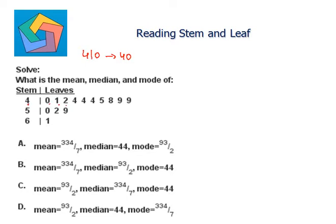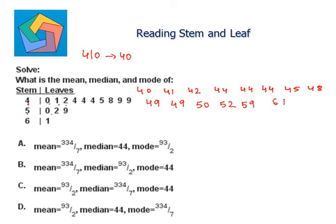So we can get our data as: 40, 41, 42, 44, 44, 44, 45, 48, 49, 49, 50, 52, 59, 61. Counting these gives us a total of 14 observations.